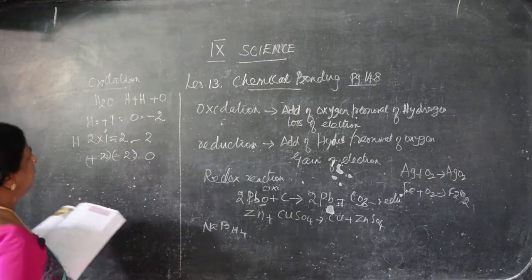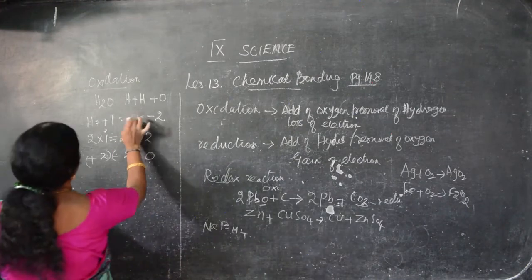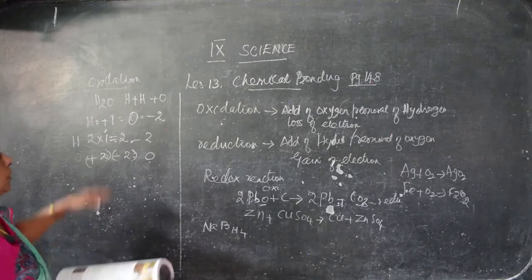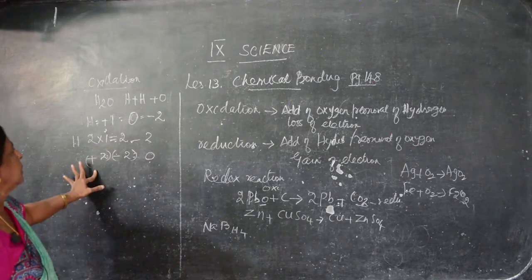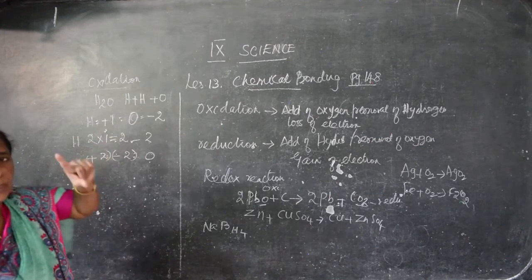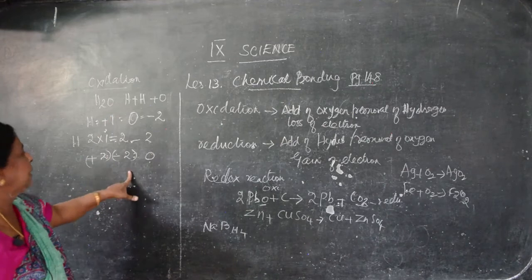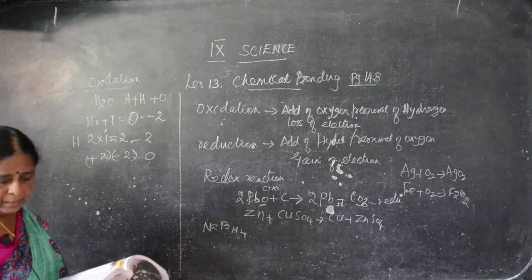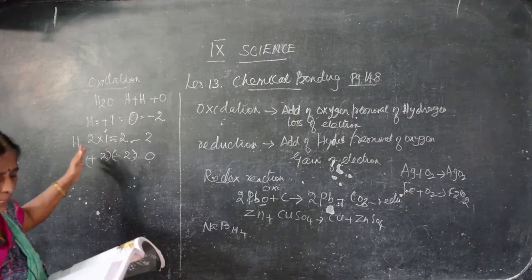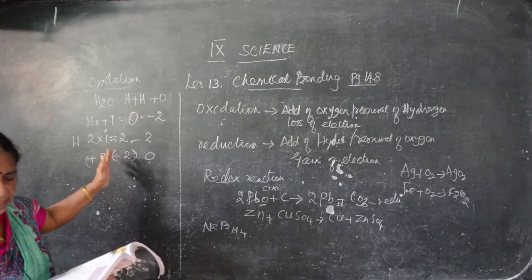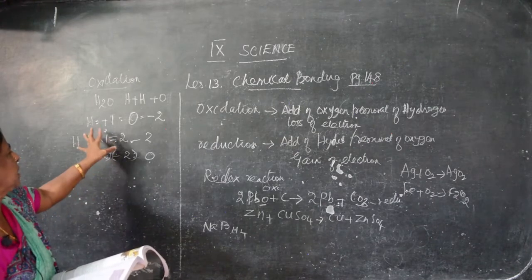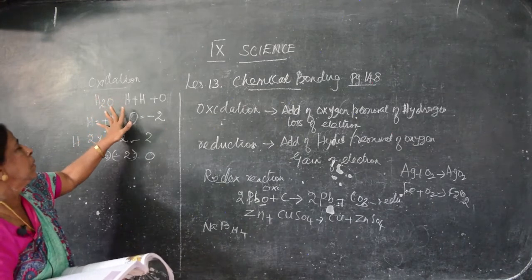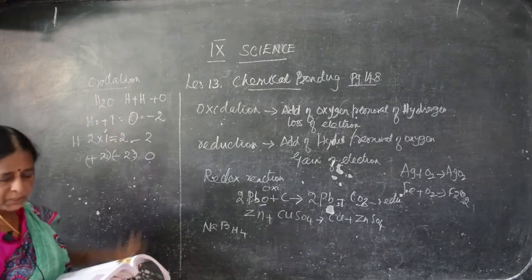Clear children? This is O — oxygen — not zero. So hydrogen 2 atoms that is plus 2; oxygen only 1 that is minus 2; plus 2 minus 2 — you can cancel. So we can say that the oxidation number of hydrogen is +1 and the oxidation number of oxygen is −2.